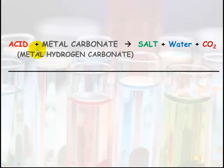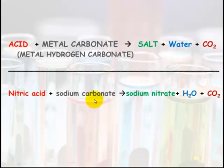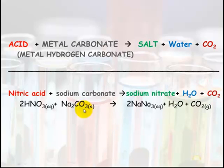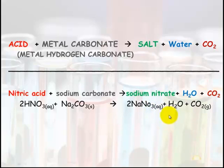The last reaction: an acid plus a metal carbonate or a metal hydrogen carbonate will make a salt plus water, and the carbonate is going to make carbon dioxide. So nitric acid plus sodium carbonate will make sodium nitrate plus water plus carbon dioxide. 2HNO₃ plus Na₂CO₃ will always make water plus carbon dioxide. The hardest part is figuring out what the salt is going to be. You've got sodium and you've got nitrate, so you just need to make sure that the valences are balanced to get sodium nitrate. Make sure that you check your solubility table.